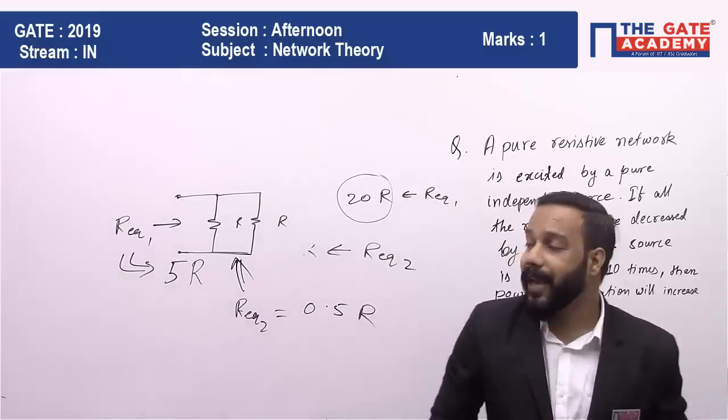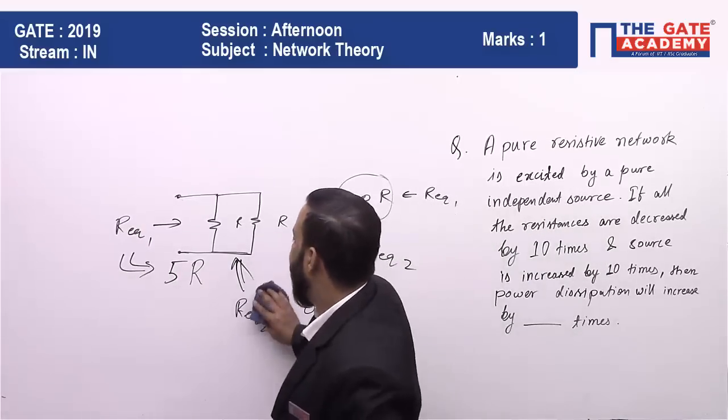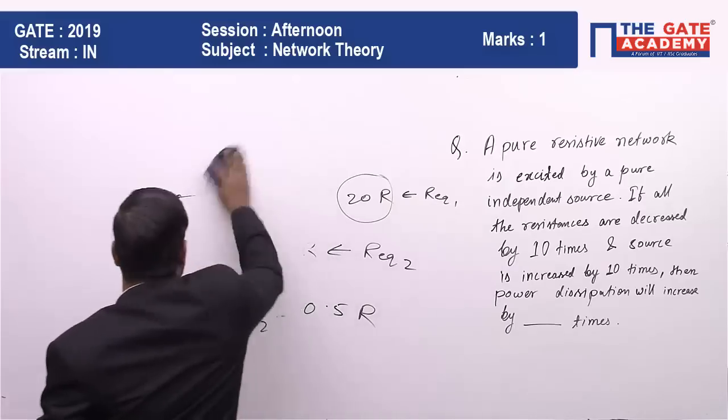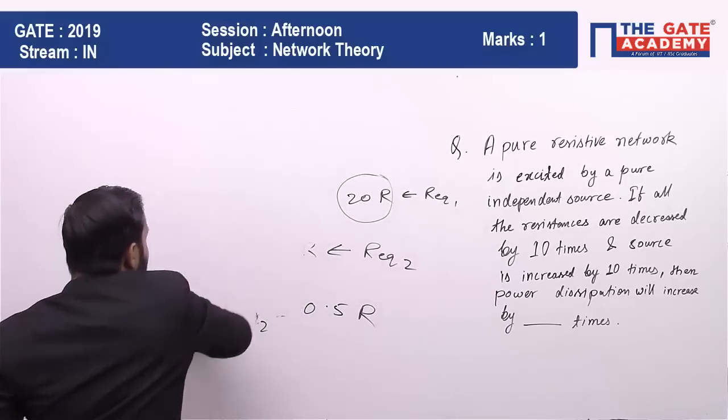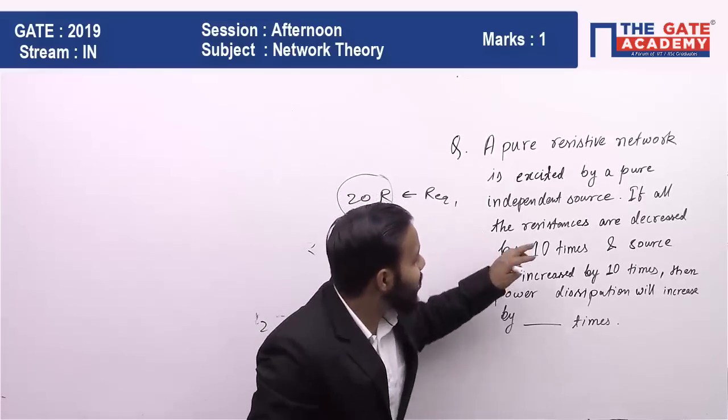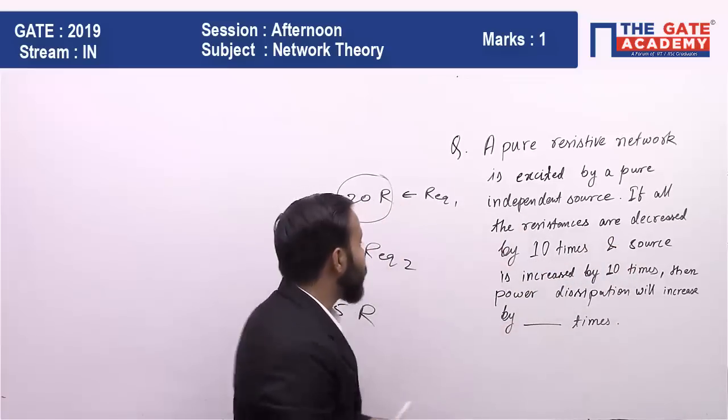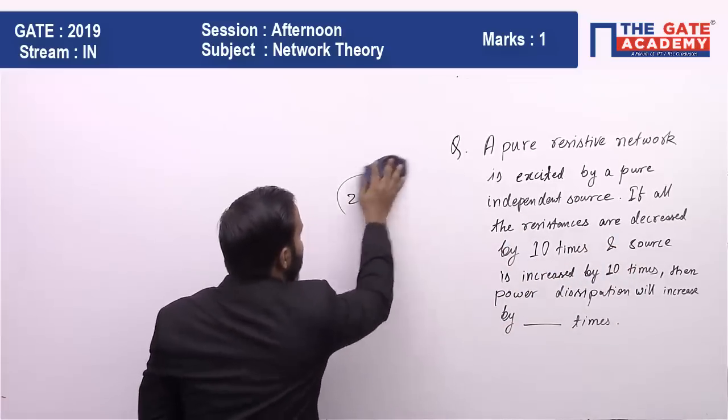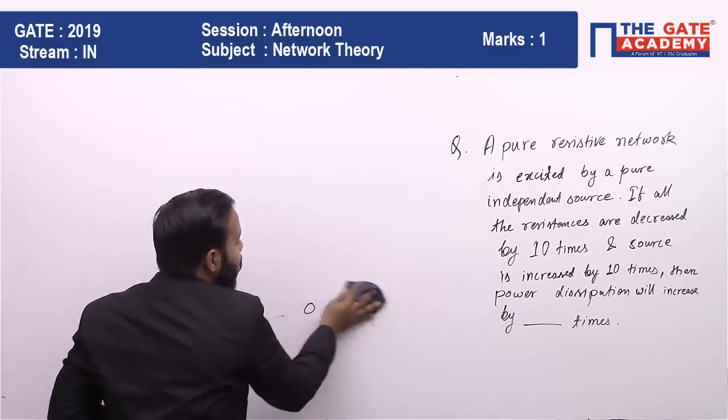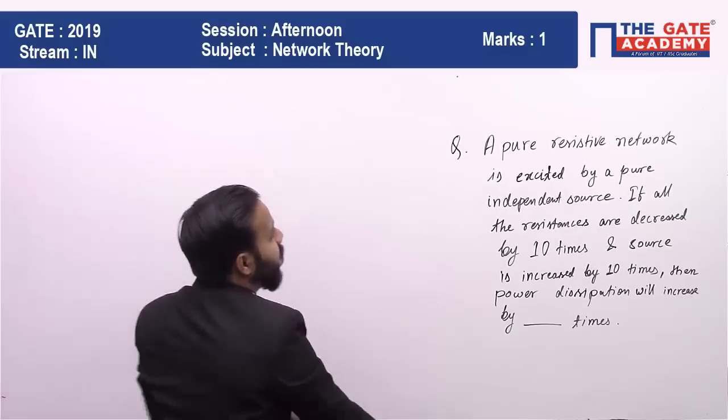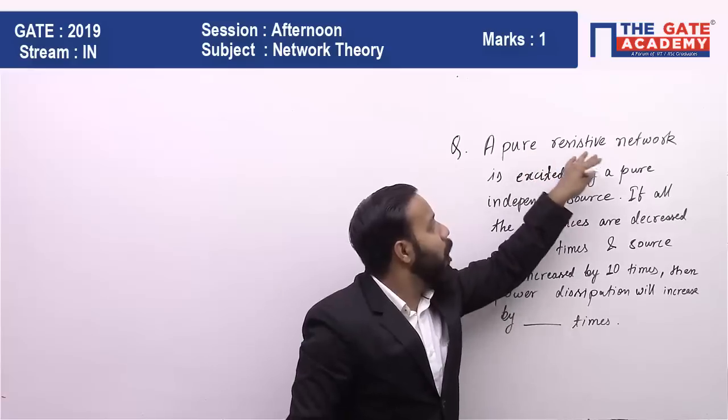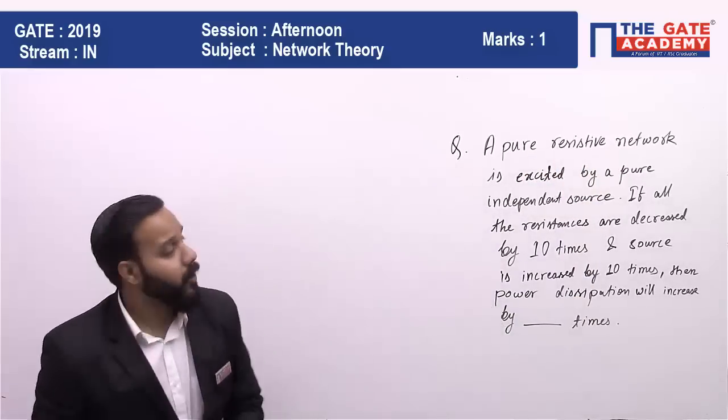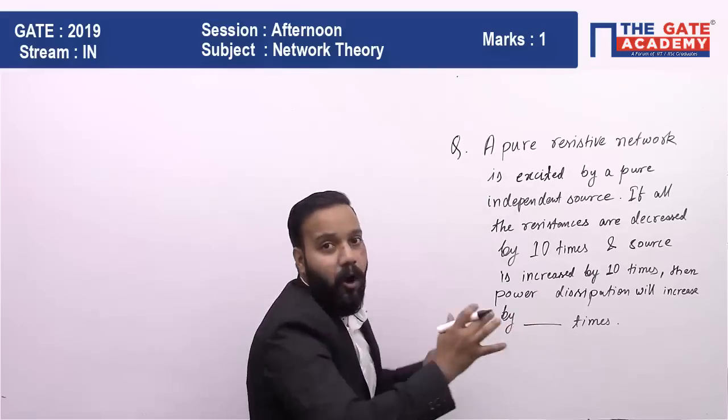By this we can clearly understand that whatsoever is the combination, if you are decreasing all the resistances by 10 times, then the equivalent resistance will also decrease by 10 times in a purely resistive circuit. Since a pure resistive network is mentioned, we can draw an equivalent circuit.